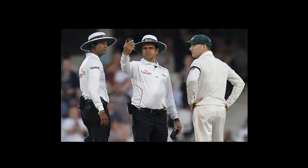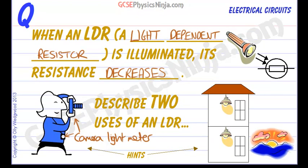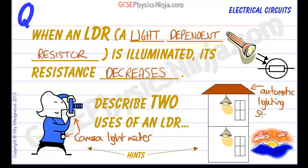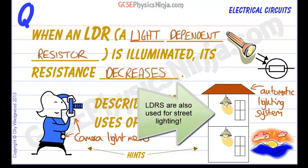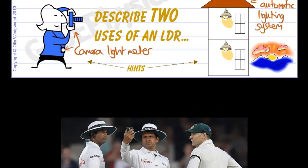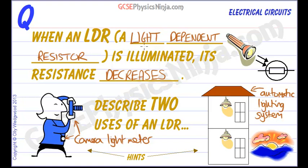If there's not enough light, then the resistance of the LDR will be too high and that will show on the readout. Another use of an LDR could be to control a home lighting system — an automatic system that switches off the lights when the sun rises in the morning, and switches them on when the sun sets in the evening. So two uses of an LDR: to measure levels of light.